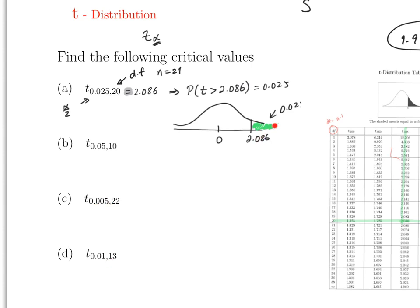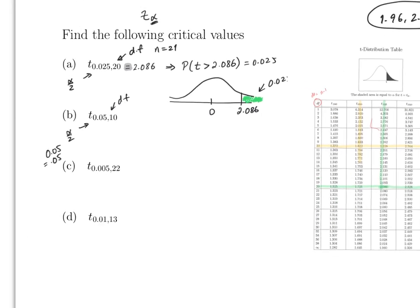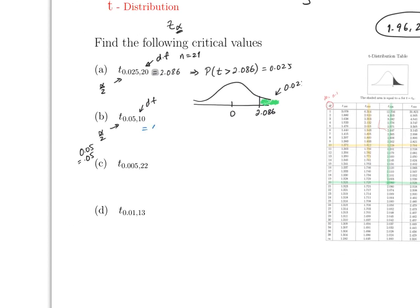For part (b), alpha over 2 is 0.05 and the degrees of freedom is 10. Looking at row 10 and the column for 0.05, the answer is 1.812.